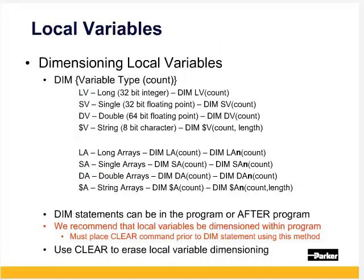For local variables, users can dimension using the DIM command, typically near the top of the program. LV is a long, which is a 32-bit integer. DIM LV(10) would dimension 10 longs.